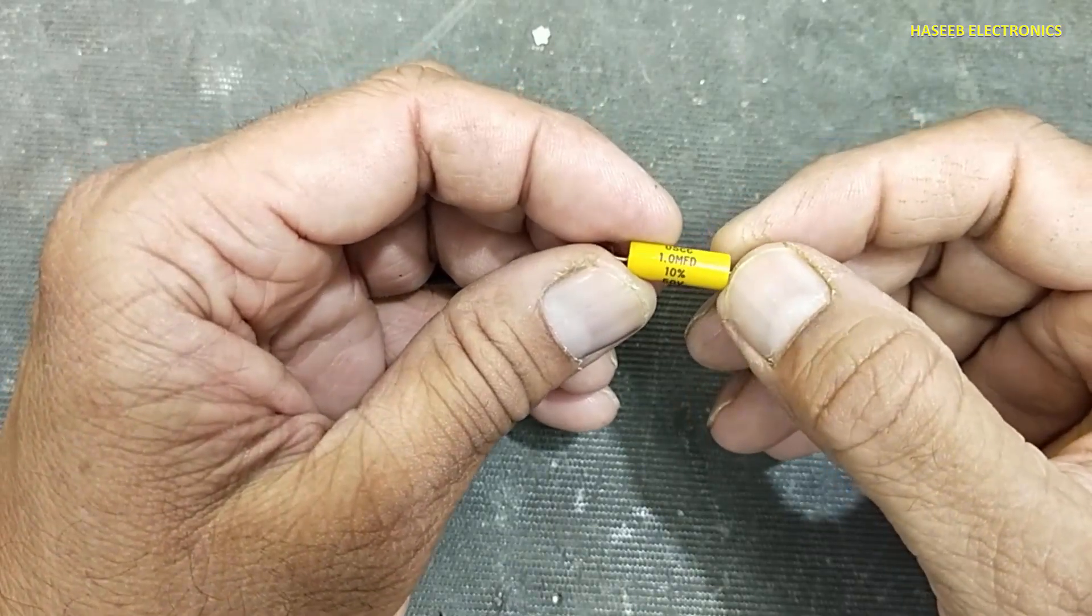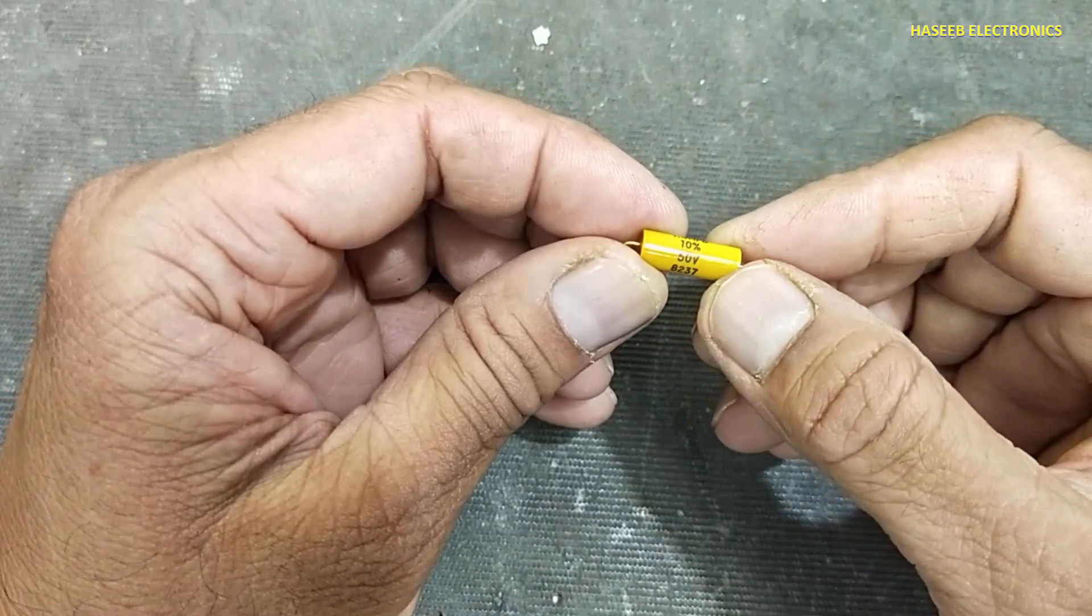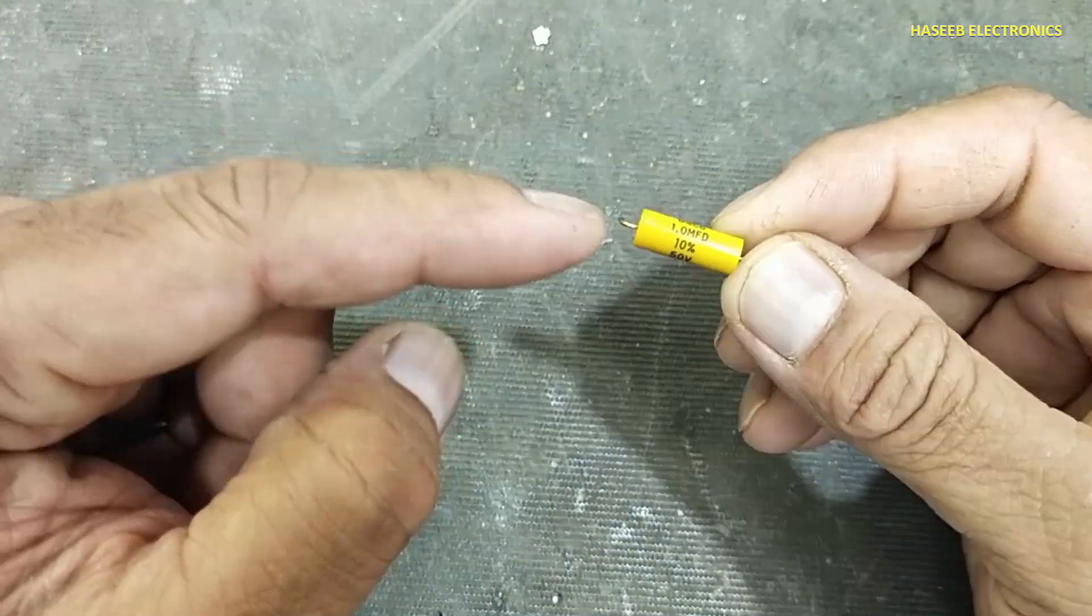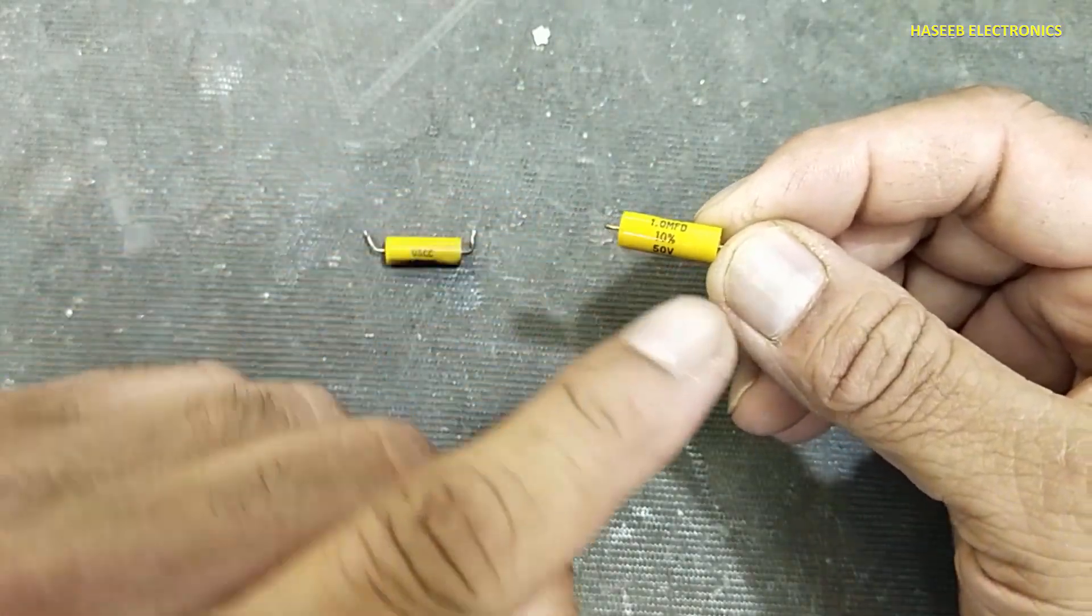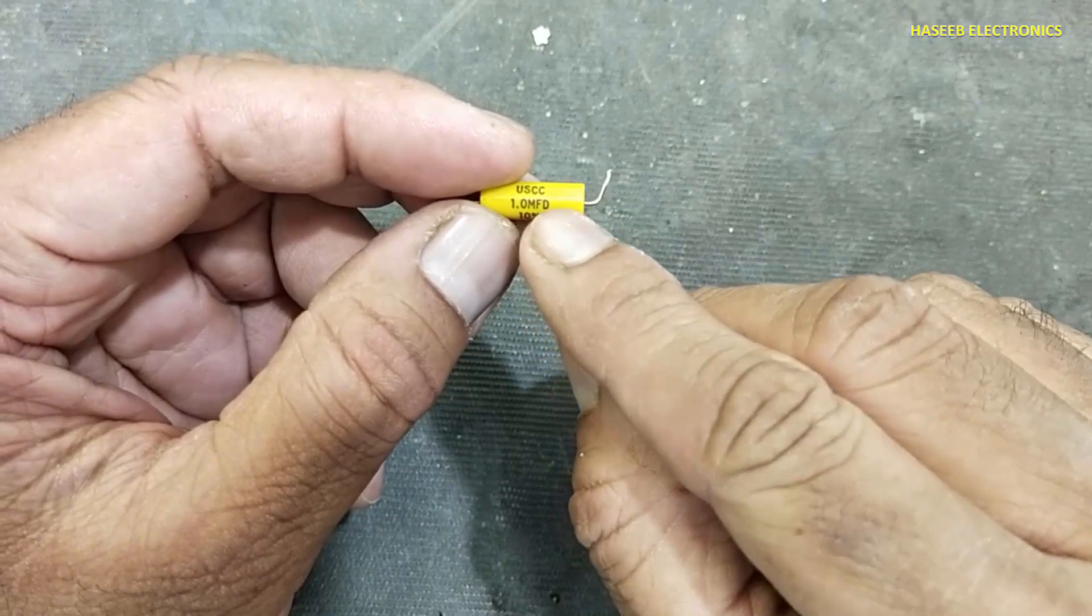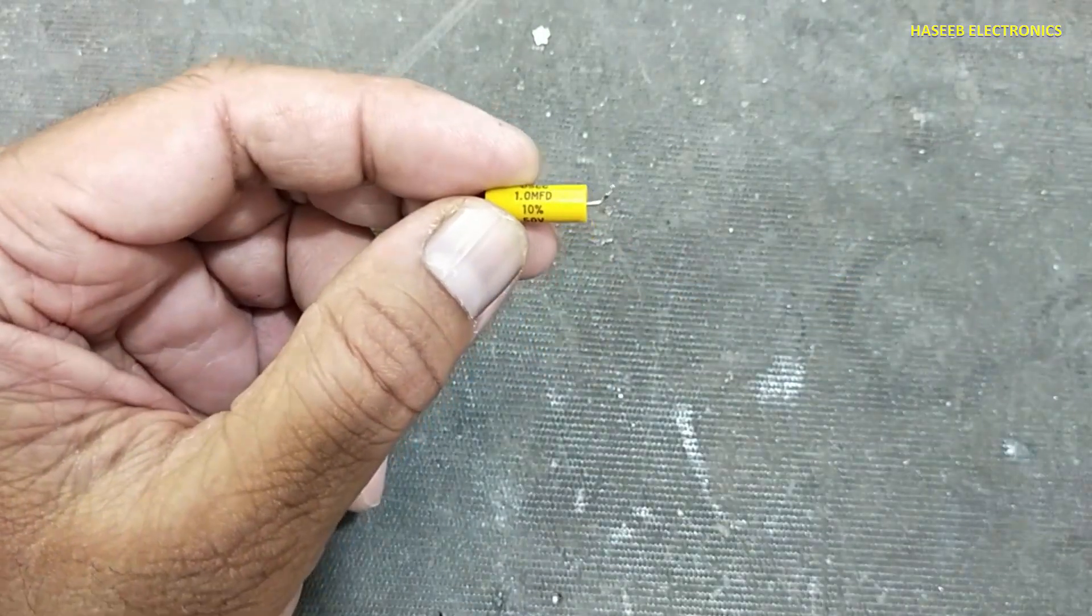Friends, welcome back to my channel. I have this 1 microfarad, 10%, 50 volt ceramic capacitor. How can we check it, whether it is good or bad? It is 1 microfarad plus or minus 10%.